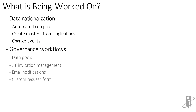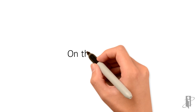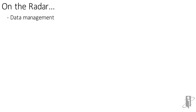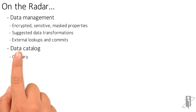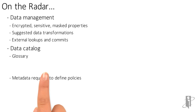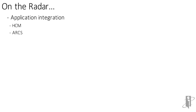There are enhancements to governance workflow and support for 5 million member hierarchies. Following are enhancements that may or may not be on the radar — enhancements are subject to feasibility and prioritization, so any or all of this could change. On data management: the ability to secure sensitive properties, EDM-CS proposed data transformations, and external lookups and commits. The data catalog category may contain a glossary, metadata requests, and approvals. Regarding application integrations, we may see HCM, ARCS, and PCMCS.